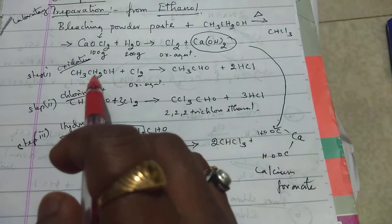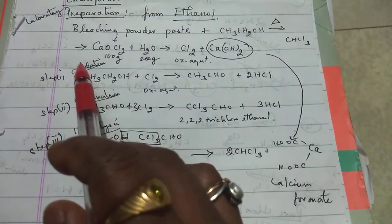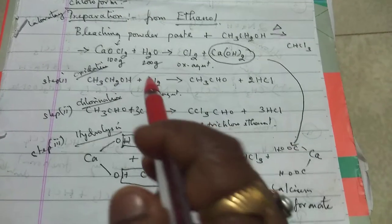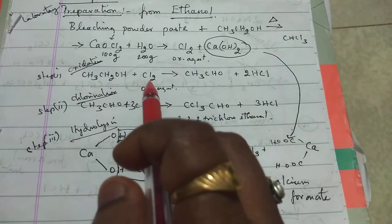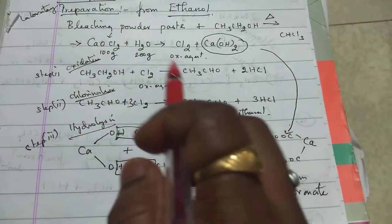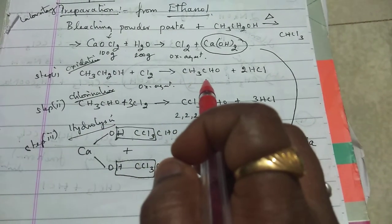In step one, the alcohol on oxidation leads to aldehyde. Chlorine acts as an oxidizing agent, so the alcohol is oxidized into aldehyde.